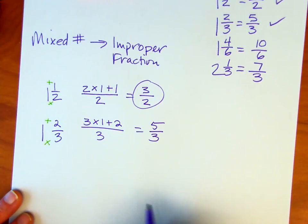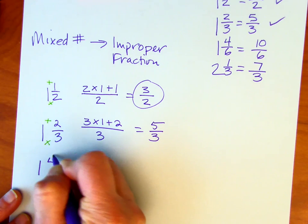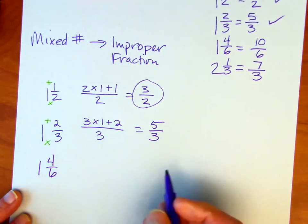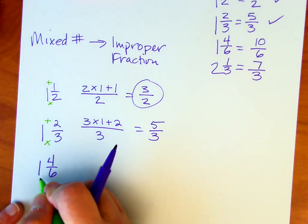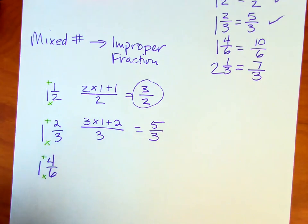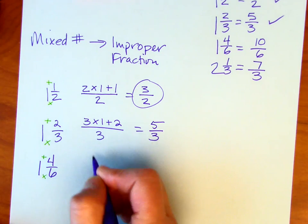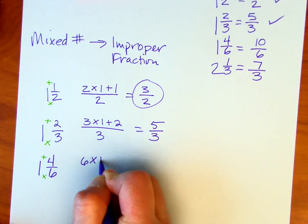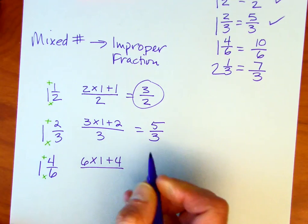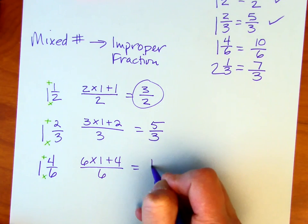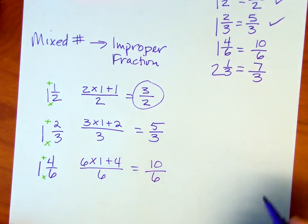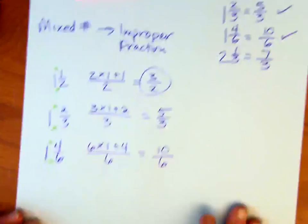Let's continue on. We've got the one and four-sixths. Well, that's going to be six times one plus four over six. Six times one is six, plus four is ten, ten-sixths.